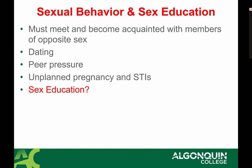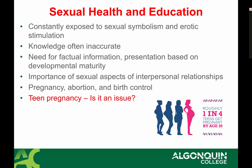Gay and lesbian teens' sexual maturity may not progress in the same way as their peers due to societal pressures and bullying, which may prevent them from going through normal stages of dating and romantic involvement. In the western world, adolescents are constantly exposed to sexual symbolism and erotic stimulation through media and the internet, and what people pick up from peers is often inaccurate, making factual information imperative.